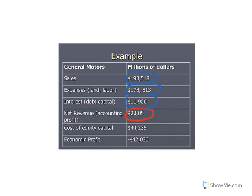They had positive accounting profit — they were making money. However, the value of the equity capital was $44 million, meaning shareholders only made collectively $2.8 million.